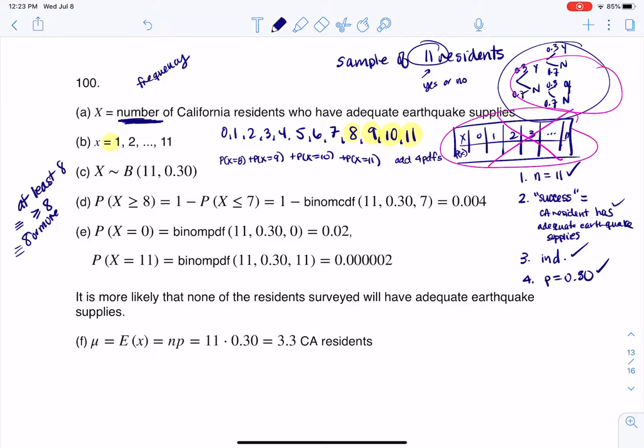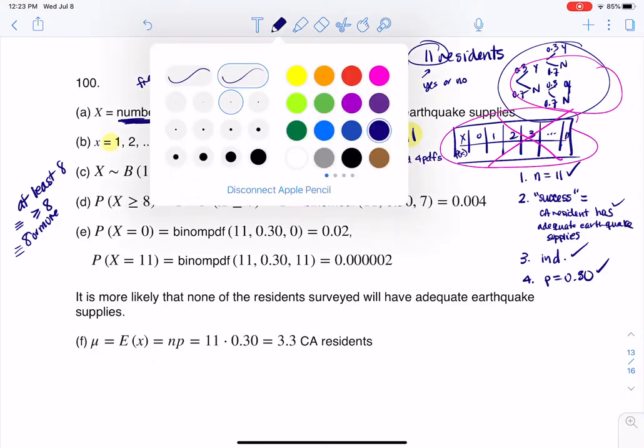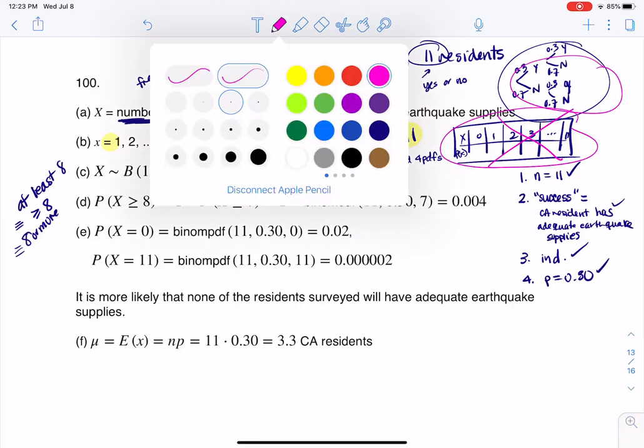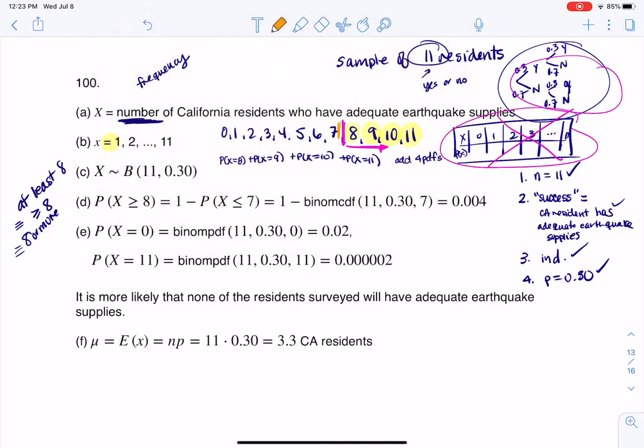Now, I'm lazy, or I guess I should say I'm efficient. And I don't like doing that. So I want to only use one calculator command. So if I want eight on up, what I do not want is the complement. I do not want seven on down. So I do not want to include seven, six, five, four, three, two, one, zero. And we do have an on down calculator command, and that is binomial CDF.